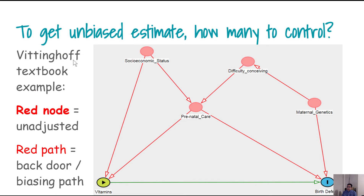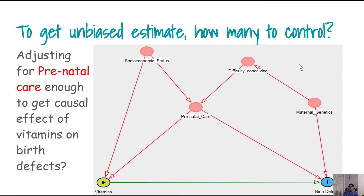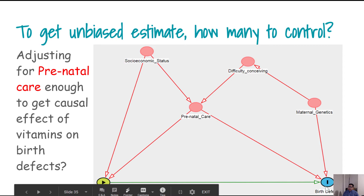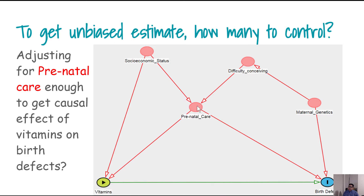This is an example from a textbook where red nodes are unadjusted variables and red paths represent backdoor or biasing paths. In this example, we want to know whether adjusting for only prenatal care is enough to get the causal effect of a vitamin on birth defects. Is adjusting for just that one variable enough to address all the problems visible in this DAG?